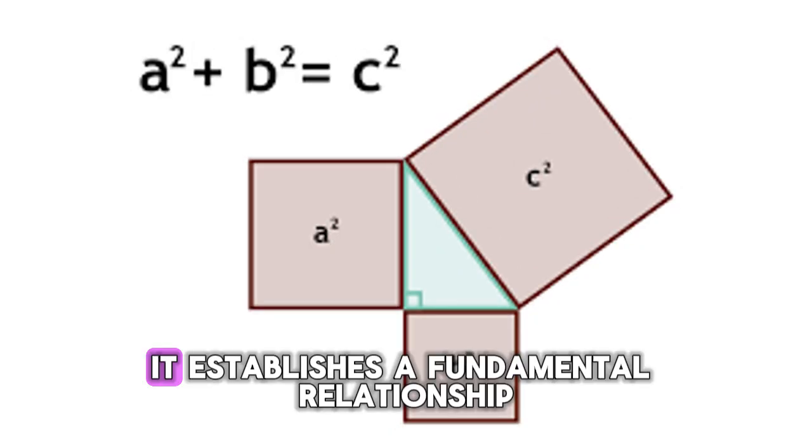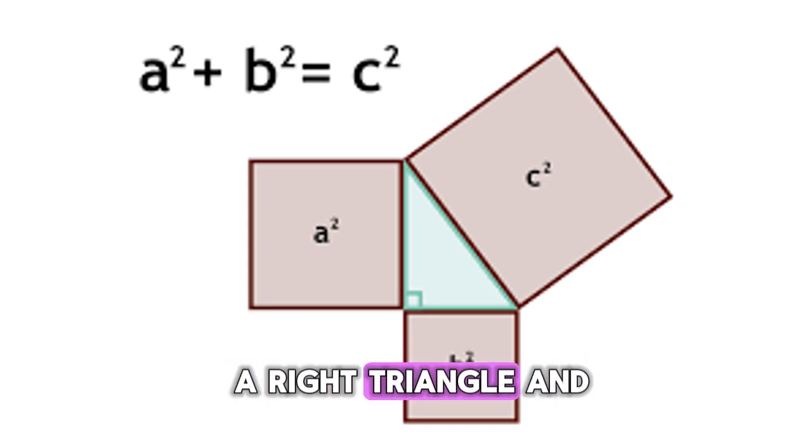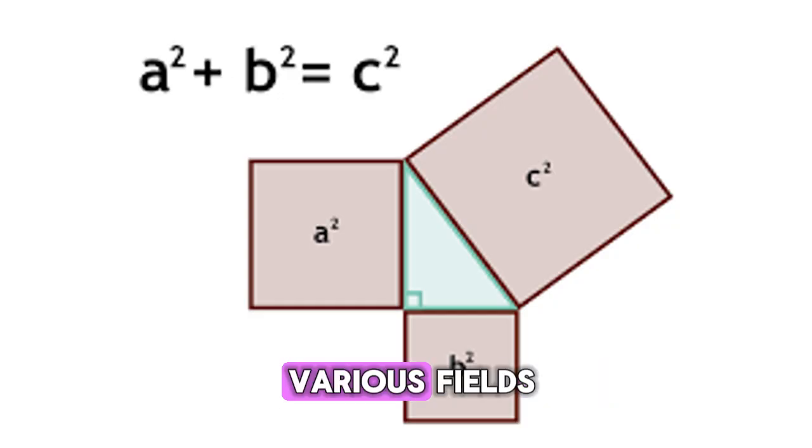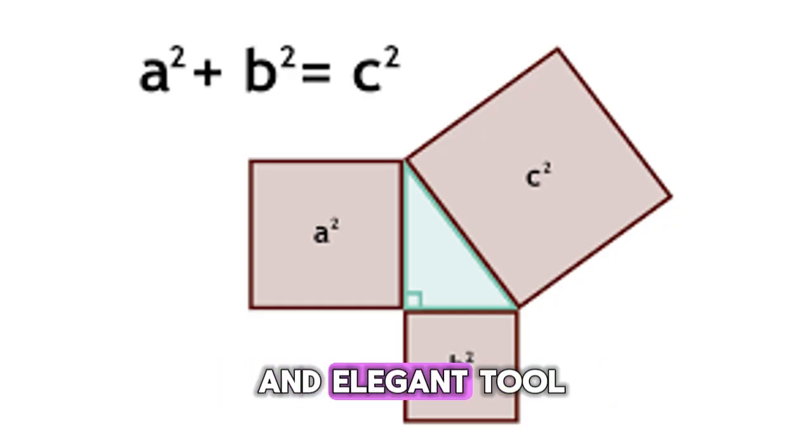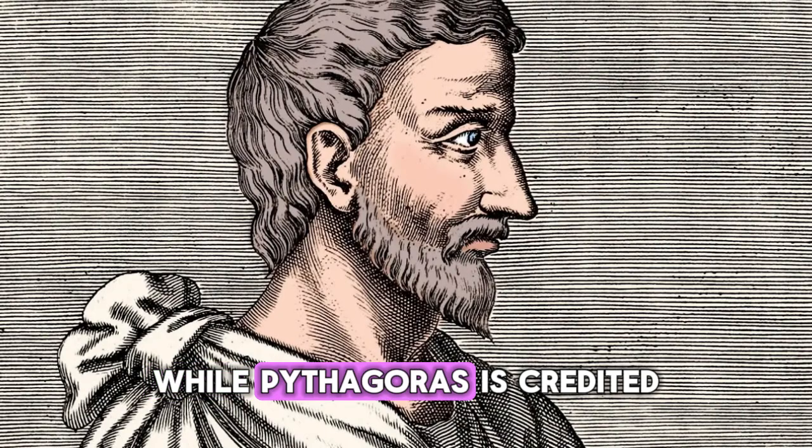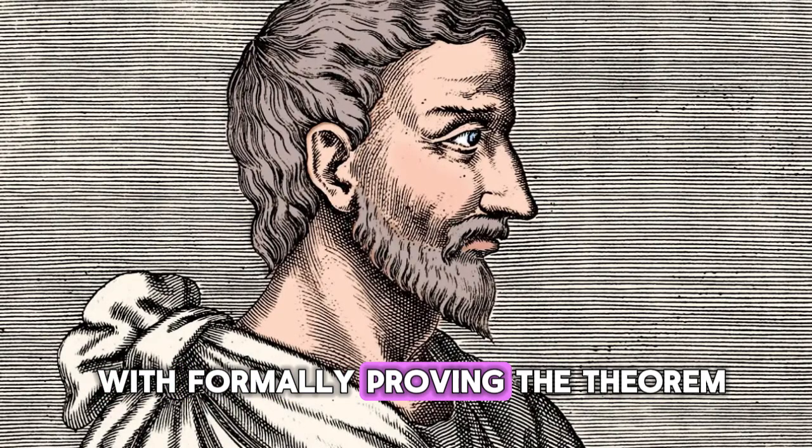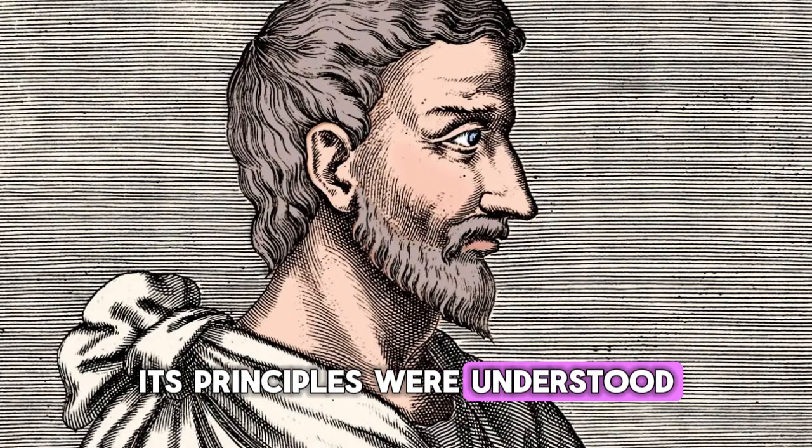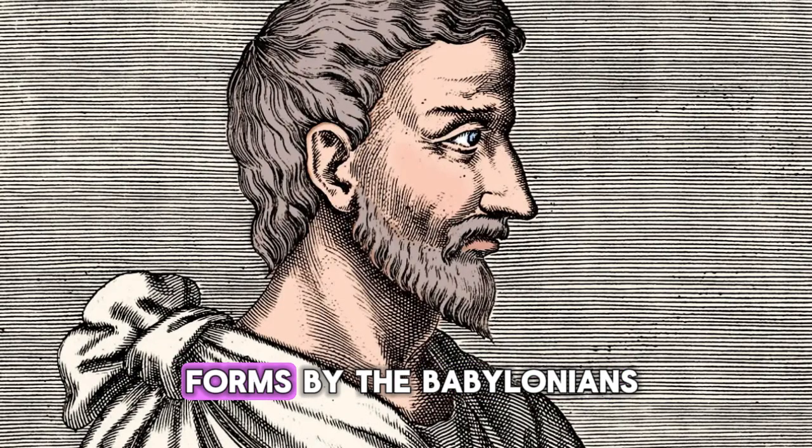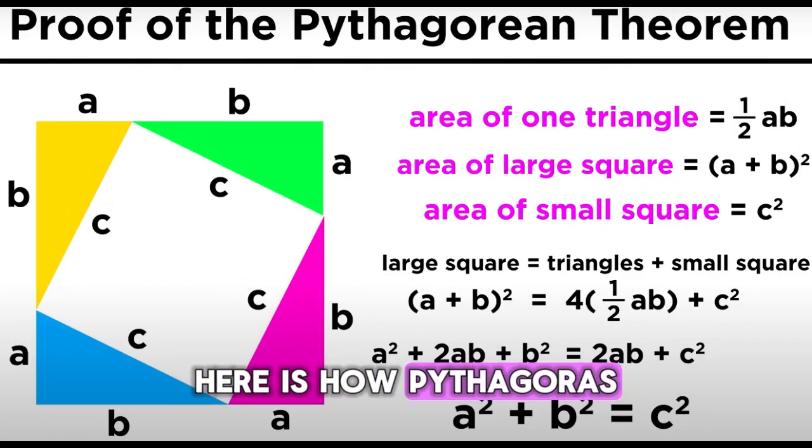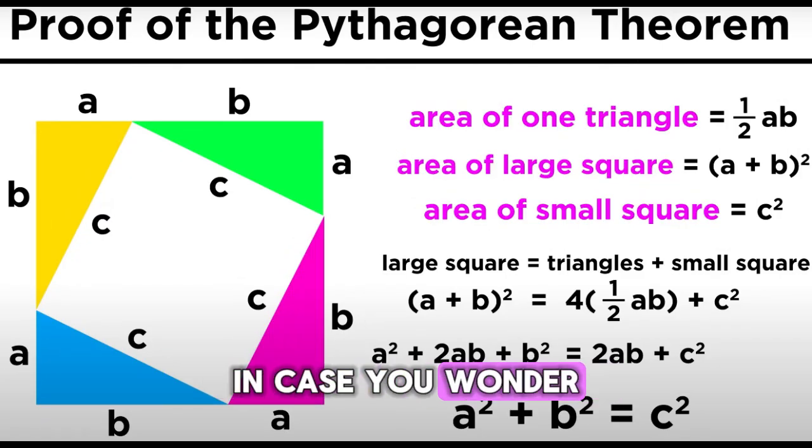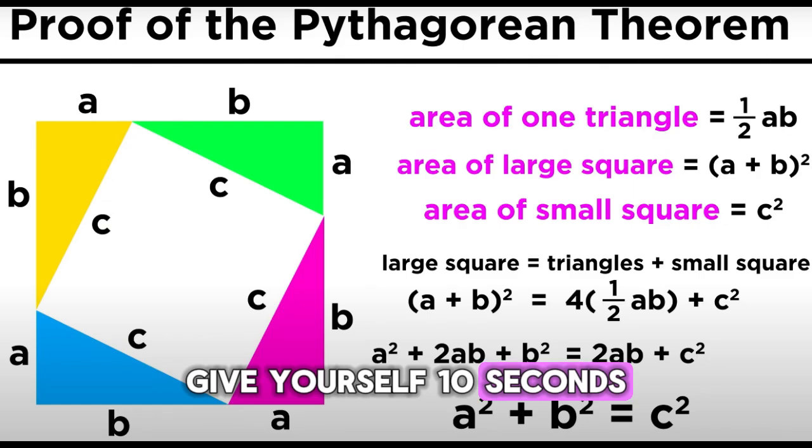Number two on this list is the Pythagorean theorem. It establishes a fundamental relationship between the sides of a right triangle and can be applied across various fields, making it a powerful and elegant tool. While Pythagoras is credited with formally proving the theorem, its principles were understood and applied in various forms by the Babylonians and Egyptians long before. Here is how Pythagoras proved it, in case you wonder. Give yourself ten seconds for a quick look.